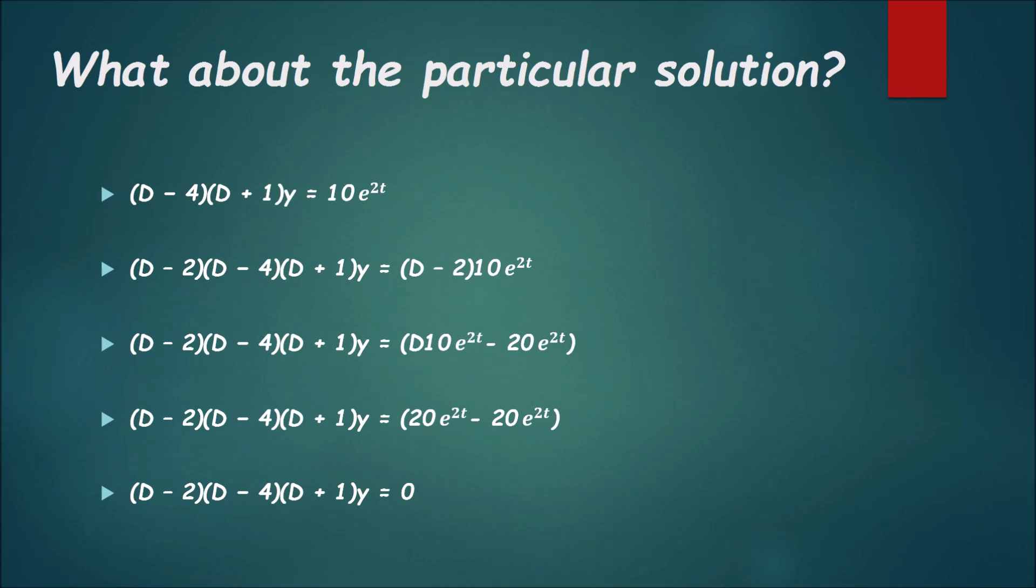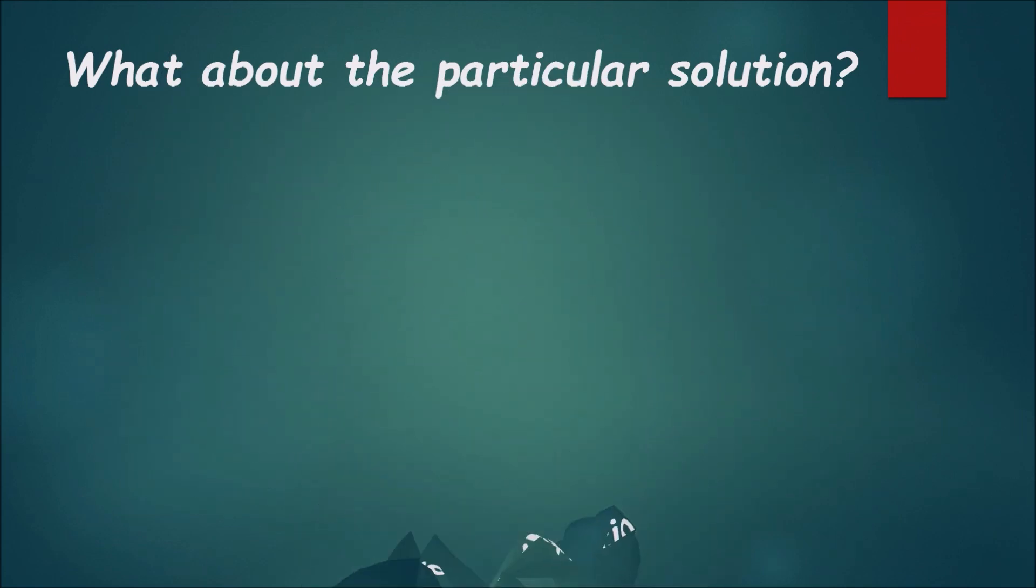So in the next step, this is my general solution now for y: Ae to the 4t plus Be to the negative t plus Ce to the 2t.